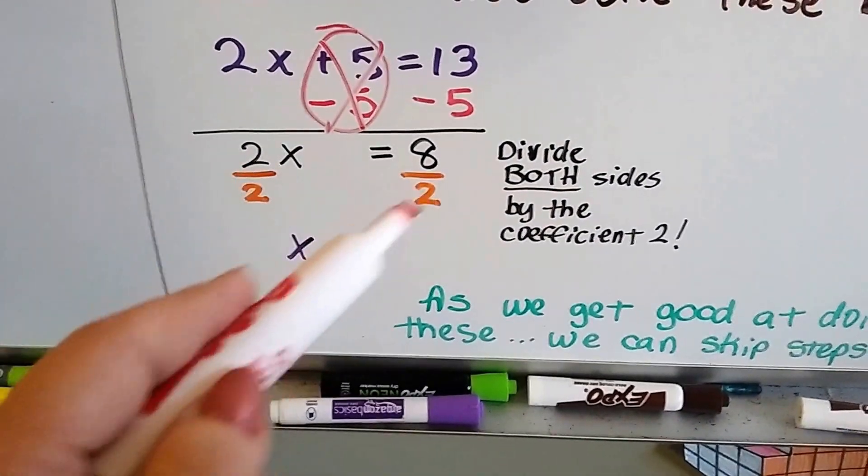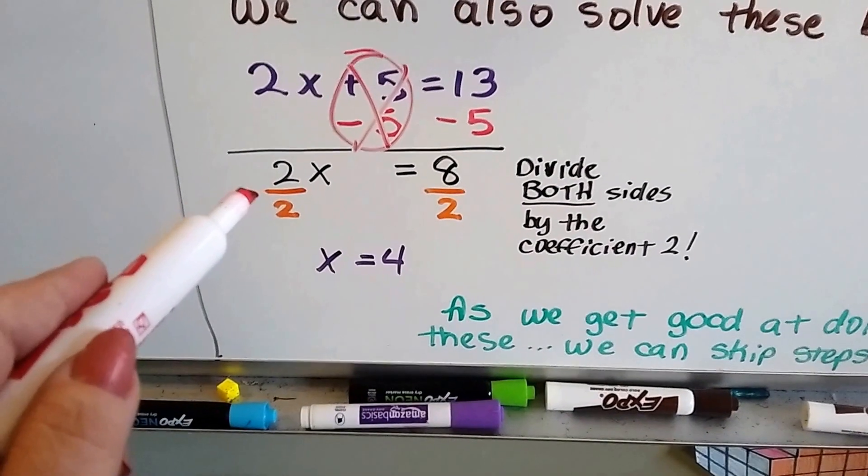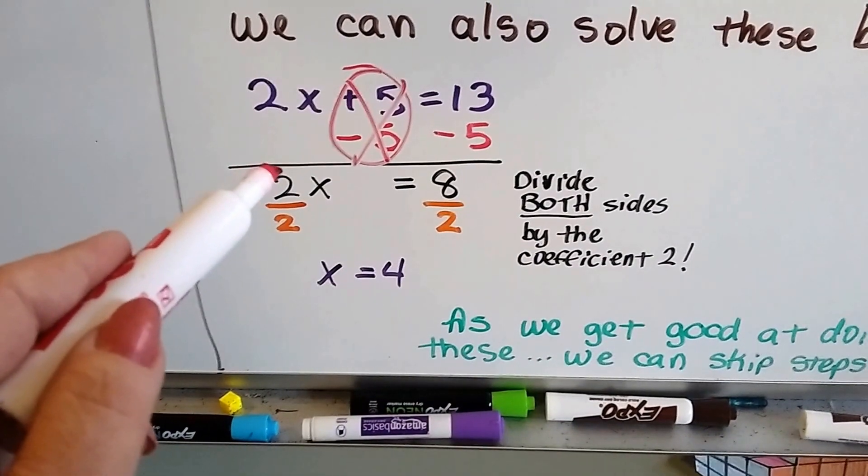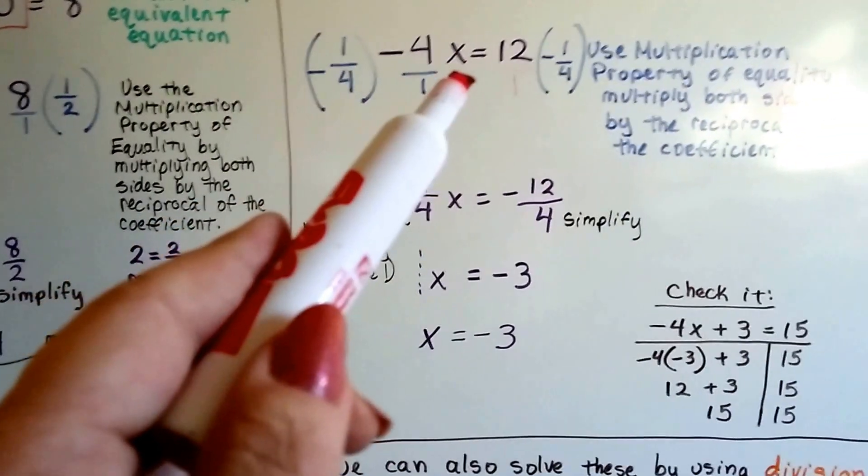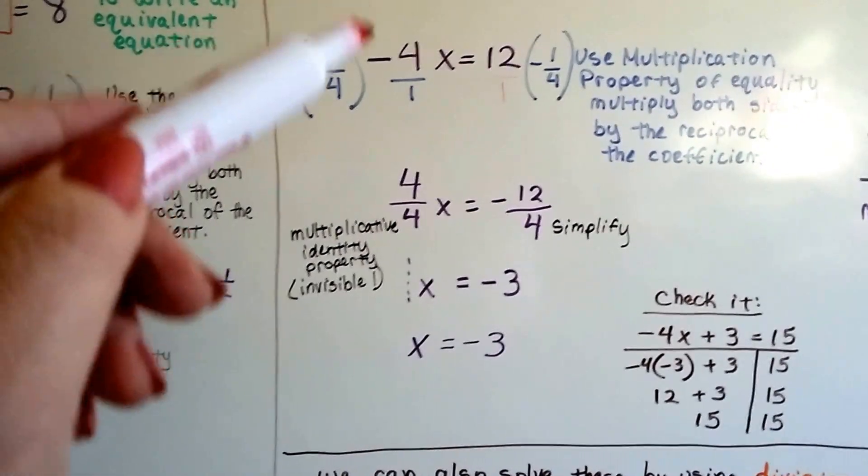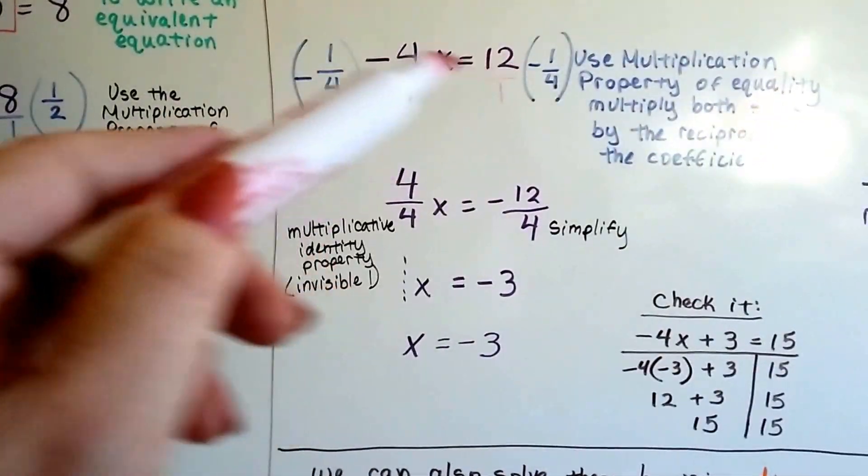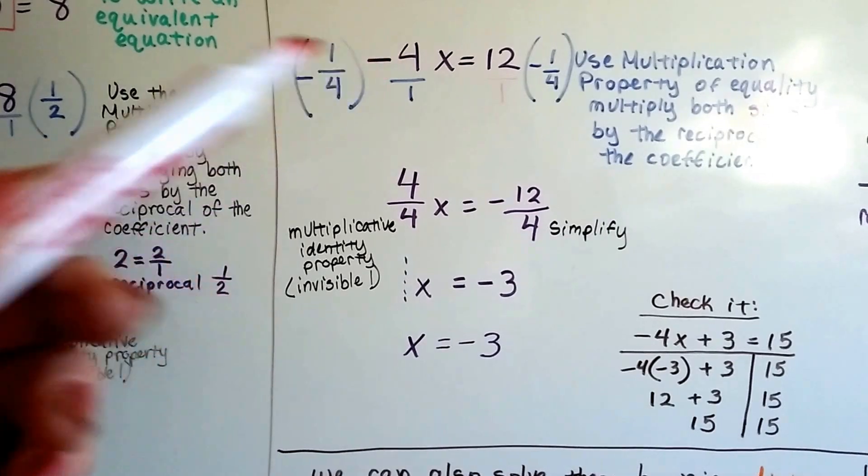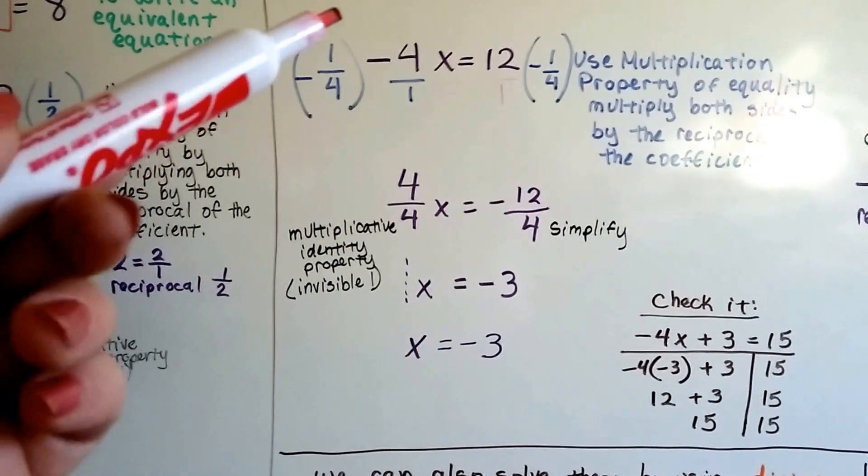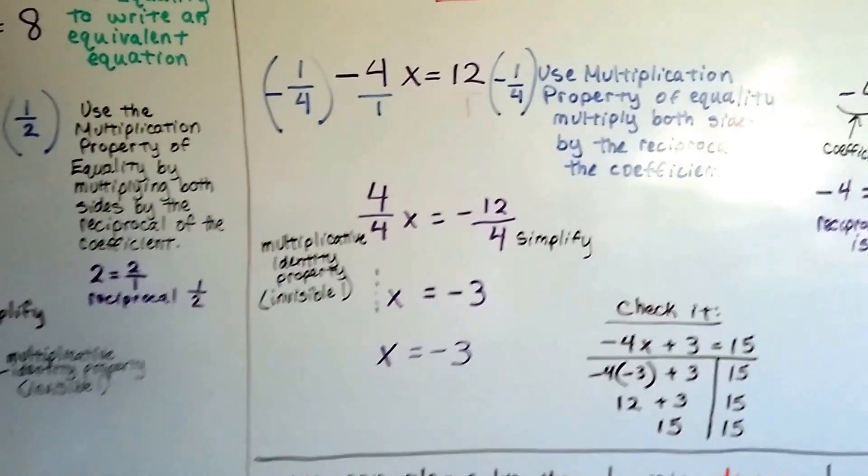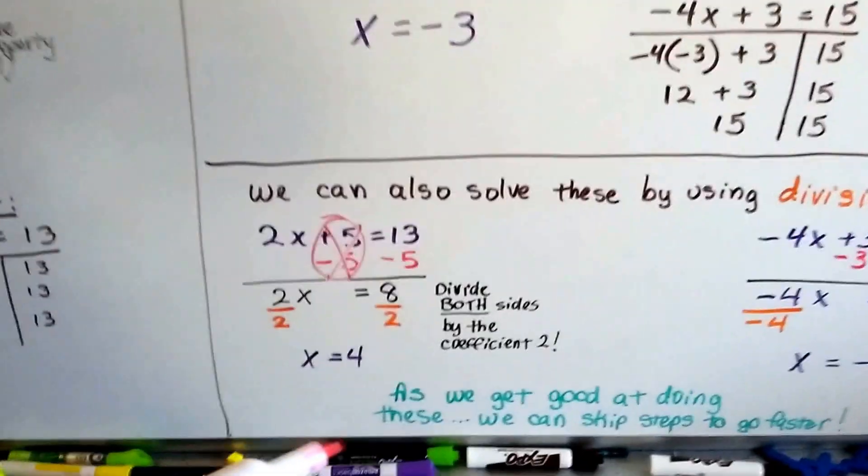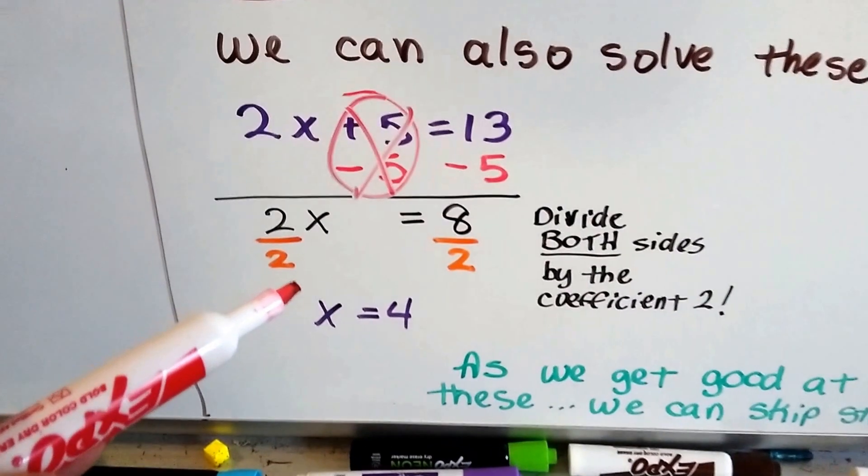We can divide both sides by the coefficient. Remember the coefficient is the number in front of the variable? We can just, instead of going through all this multiplying the reciprocal stuff, which is great if one of these is a fraction. That's perfect. If one of the rational numbers in our equation is a fraction, then multiplying by the reciprocal is just smooth because it just multiplies right into that fraction. But when we've got whole numbers, we could just divide by the coefficient.